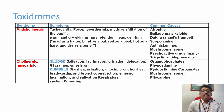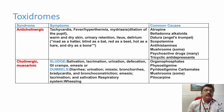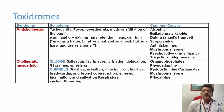The mnemonic for anticholinergic toxicity is: mad as a hatter, blind as a bat, red as a beet, hot as a hare, and dry as a bone. The main causative agent in our country is datura poison, with many patients presenting each year. Another important drug in this group is tricyclic antidepressant poisoning.